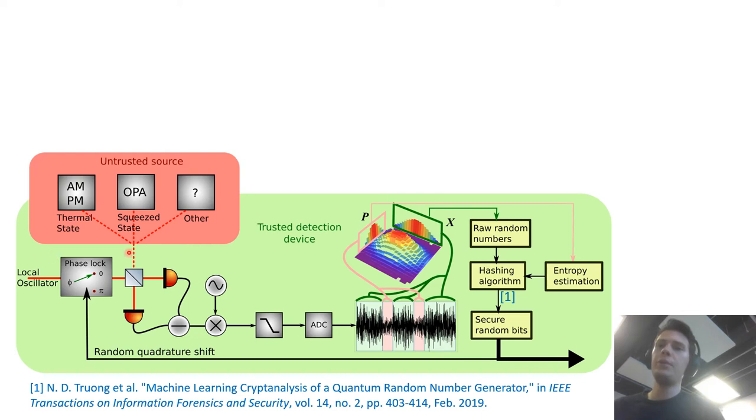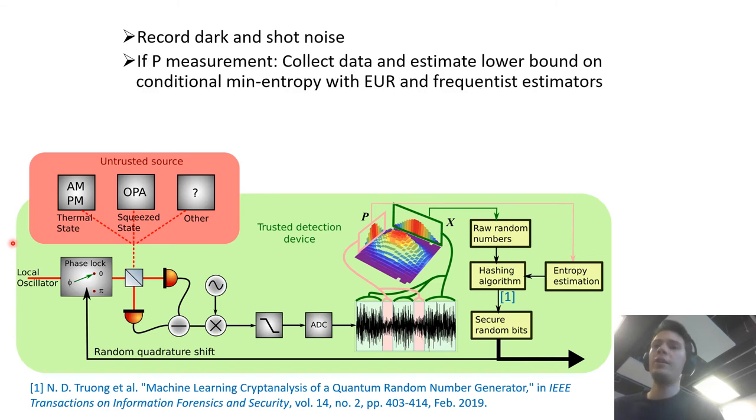Now we also have some beam blocks on the source and local oscillator so that every time we do a measurement we can block the beams, record the dark noise and then block the source and record the shot noise. This will allow us to calibrate what POVM we are actually measuring. And now if we are measuring P that's our check measurement we'll collect data and estimate a lower bound on the conditional min entropy using the entropic uncertainty principle.